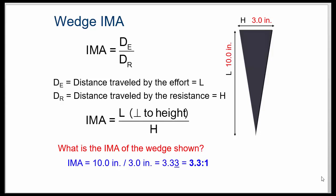So here's an example. How do you do the ideal mechanical advantage when you know this is the formula? Well, with a wedge, it's a little bit different. Take the length of the wedge and divide it by the height.